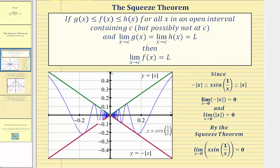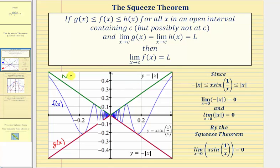Let's look at this graphically. Notice how this blue function is between this top function and this bottom function. So let's let f of x be equal to the middle function, or the blue function, which happens to be f of x equals x times sine of one divided by x. And let's let the lower function, or this red function, be equal to g of x, which is equal to the opposite of the opposite of i of x. And finally, we'll let h of x be equal to this top function, which is equal to the opposite of i of x. If we consider these functions on an open interval as we approach x equals zero, we can use the squeeze theorem to determine the limit as x approaches zero of f of x.